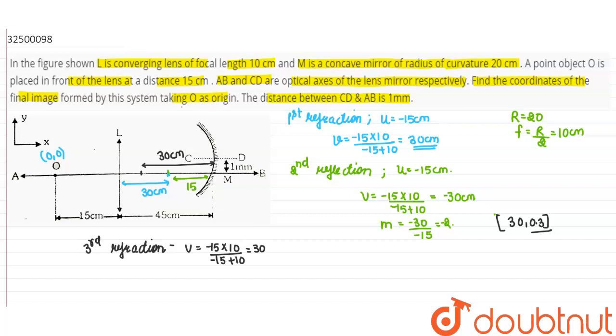The magnification is minus 30 divided by minus 15, that is minus 2. So the final coordinates will be minus 15 cm, then minus 6. So this will be our right answer. Thank you.